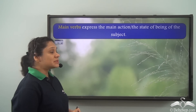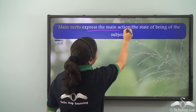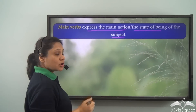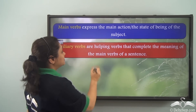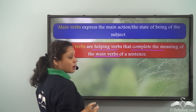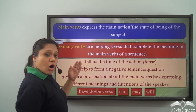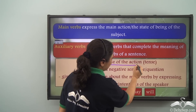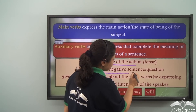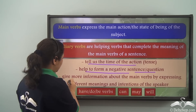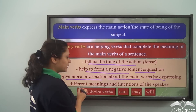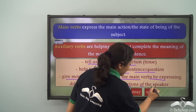Main verbs express the main action or the state of being of the subject, whereas auxiliary verbs are helping verbs that complete the meaning of the main verbs of a sentence. Auxiliary verbs tell us the time of the action or the tense. They help to form a negative sentence or a question, and they give us more information about the main verbs by expressing different meanings and intentions of the speaker.